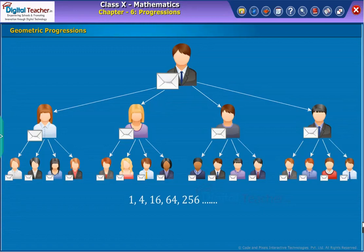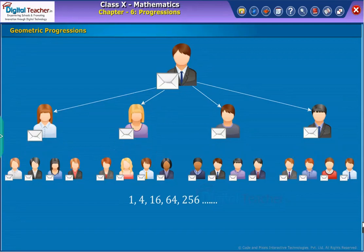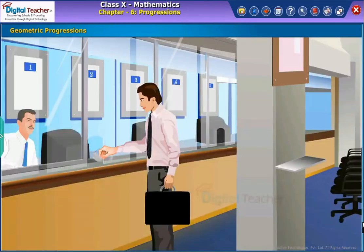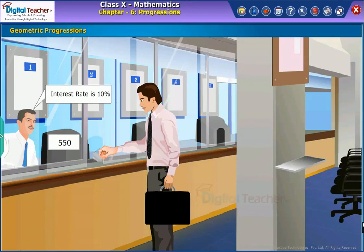The total amount at the end of first, second, third years and so on, if Rs. 500 is deposited in the bank with annual rate 10% interest compounded annually is 550, 605, 665.5 and so on. And the list of numbers are in GP, since the common ratio between two successive terms is same.